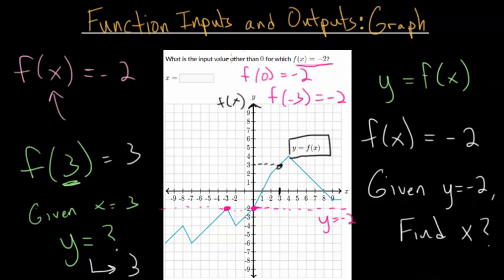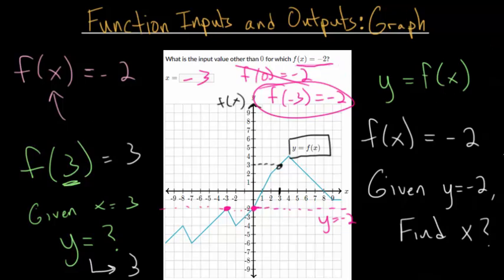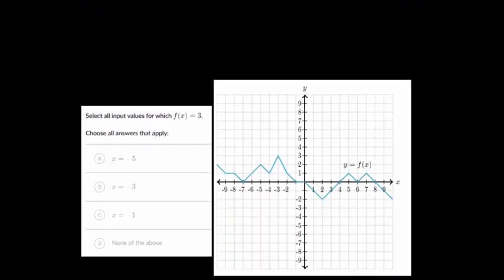With this question, they asked for the input value other than 0. So x equals 0 is not the one we're looking for. When x is minus 3 and you plug that into the function, you get back a function value of negative 2. So with that in mind, let's do several more of these just to get the hang of it.